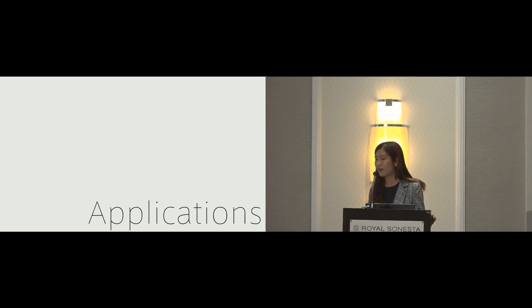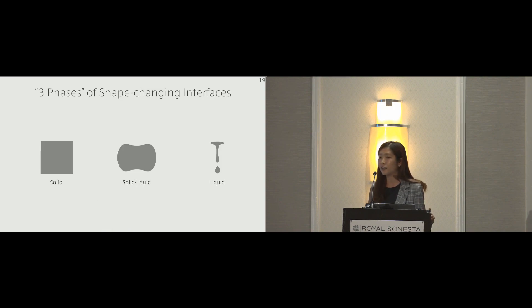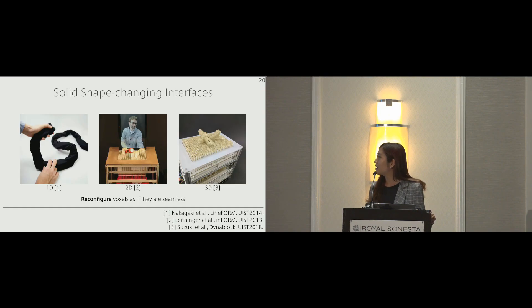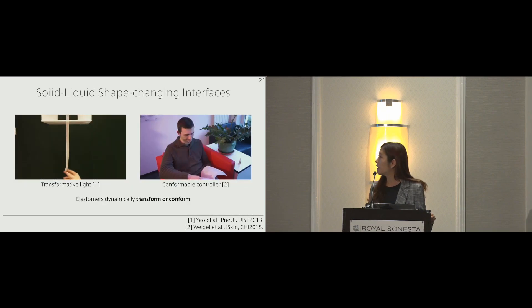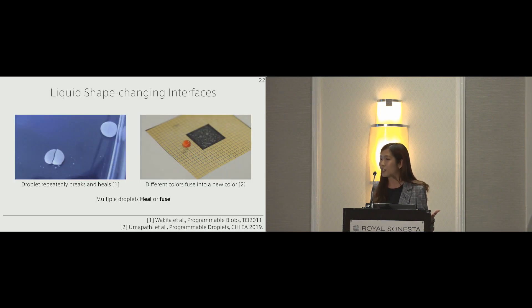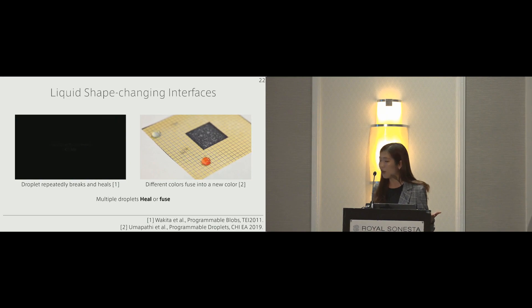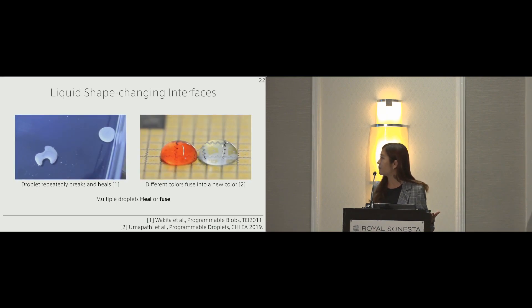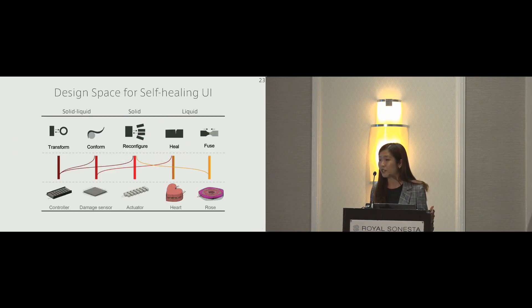Before looking into the applications for our paper, we would like to summarize design spaces conventional shape-changing interfaces could afford, depending on three phases of material: solid, solid-liquid, and liquid. Solid shape-changing interfaces has been widely explored in 1D, 2D, and 3D form based on reconfiguring voxels. Solid-liquid shape-changing interfaces has been introduced by elastomers dynamically transform or conform. Liquid shape-changing interfaces has been introduced by manipulating magnetic field or electrical field to heal or fuse multiple droplets. Since our paper is highly based on the material properties for self-healing material, we include all three phases in the design space. We demonstrate transformability and conformability for the solid-liquid phase, reconfigurability for the solid phase. Since our material can heal and self-fuse, it belongs to the liquid phase for the material.